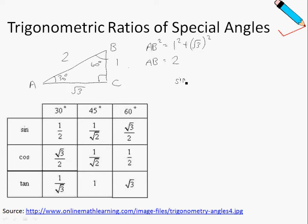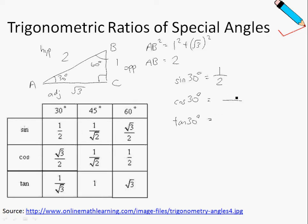Recall that sine of 30 degrees — if 30 degrees is my reference angle, then BC is opposite, AC is adjacent, and AB is the hypotenuse. So sine of 30 degrees is opposite over hypotenuse, which is 1 over 2. Cosine 30 degrees is adjacent over hypotenuse, which is root 3 over 2. And tangent 30 degrees is opposite over adjacent, which is 1 over root 3.